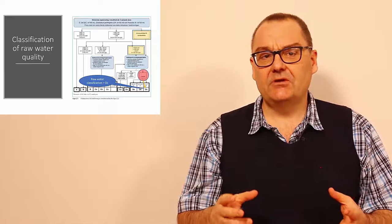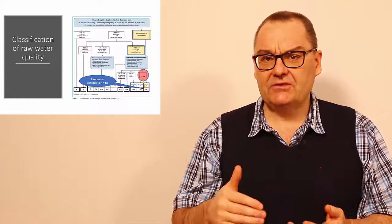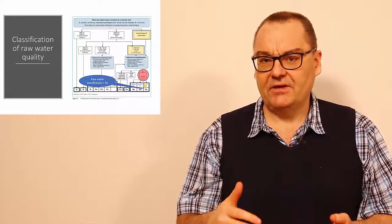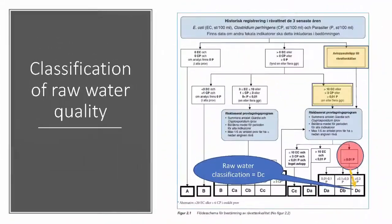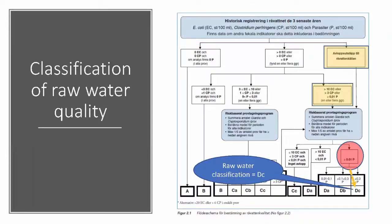In the guideline you will find this flow sheet and this we will use now to see how many theoretical barriers we need with the wastewater we are now working with. Here on top you have a square saying historical registration in the raw water the last three years. So over the last three years you should have background analysis of the raw water in regard to the indicator parameters such as E. coli as we discussed just previously.